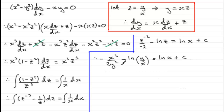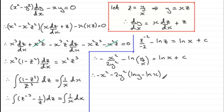Multiplying throughout by 2y² and rewriting ln(y/x) as ln(y) − ln(x), we get minus x² minus 2y²·ln(y) + 2y²·ln(x) equals 2y²·ln(x) plus 2y²·c.